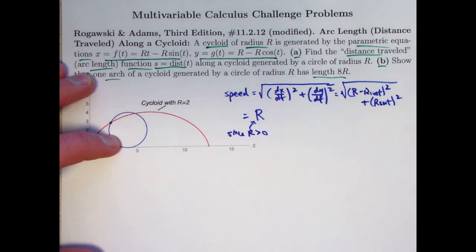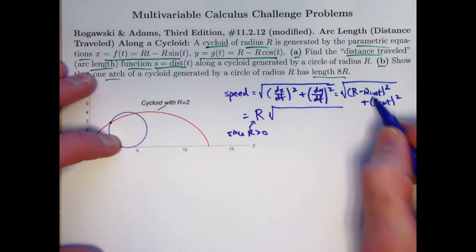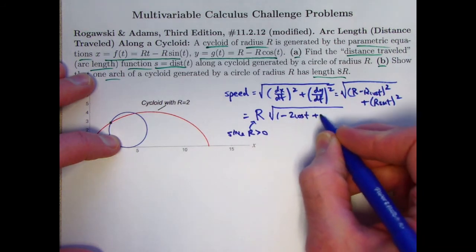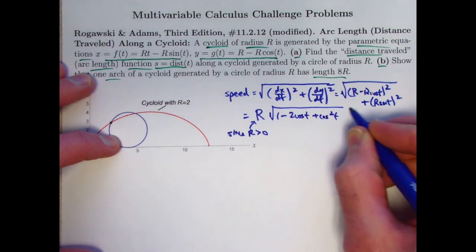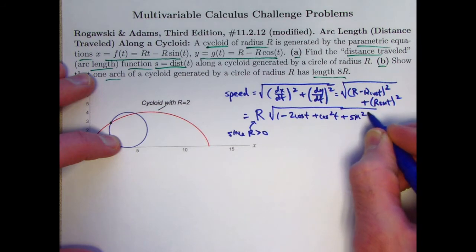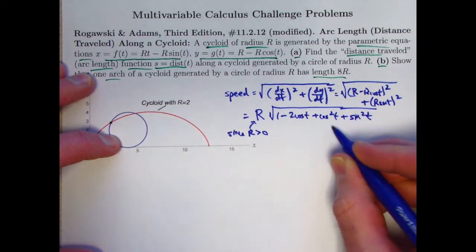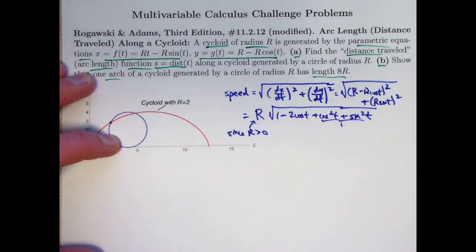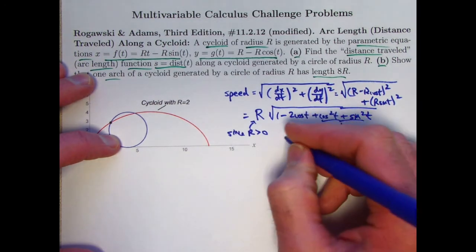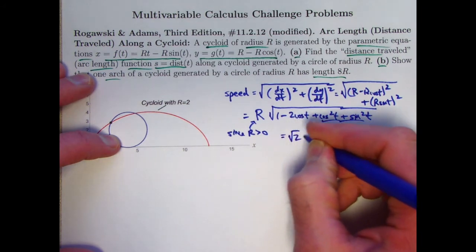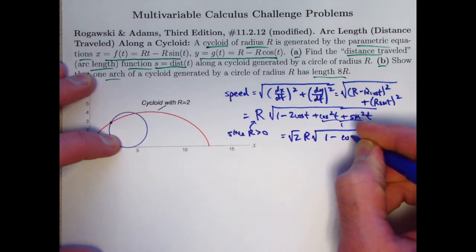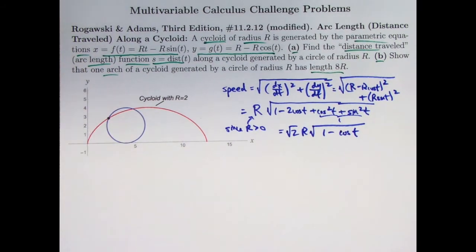What's left inside the square root? Squaring 1 minus cosine t gives 1 minus 2 cosine t plus cosine squared t; squaring sine t gives sine squared t. Using the Pythagorean identity, cosine squared t plus sine squared t equals 1, so we get 2 minus 2 cosine t. The 2 can be factored out, and we can write: square root of 2 times r times square root of 1 minus cosine t. That is the speed as a function of time.